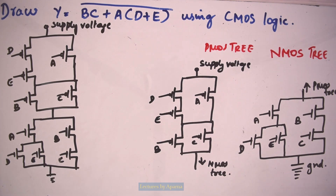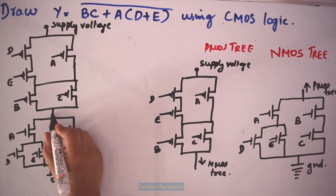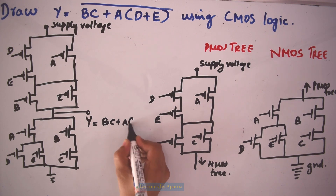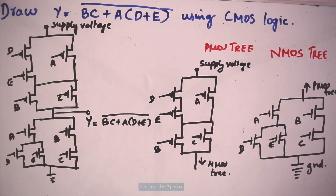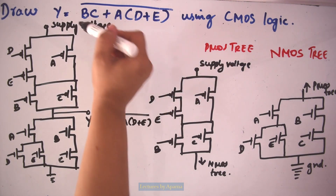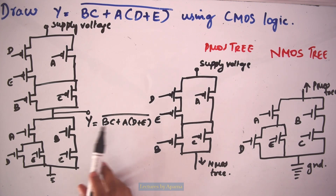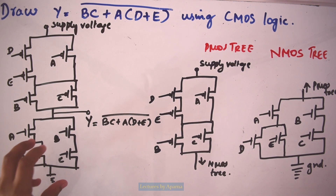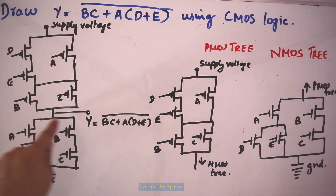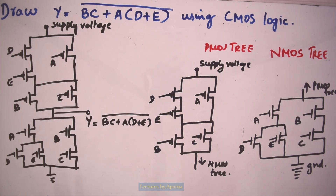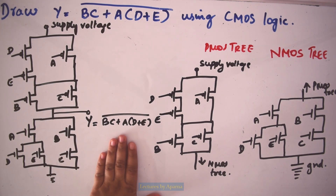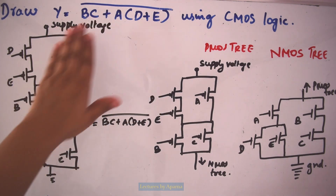The output is taken from the point connecting the PMOS and NMOS trees. At this point you will get the output BC plus A into (D plus E), the whole bar. Even though we implement the inner function, at the output you get the complement of that, since this resembles the structure of a basic CMOS inverter where supply voltage, PMOS transistor, NMOS transistor, and output are taken from the connection between them.